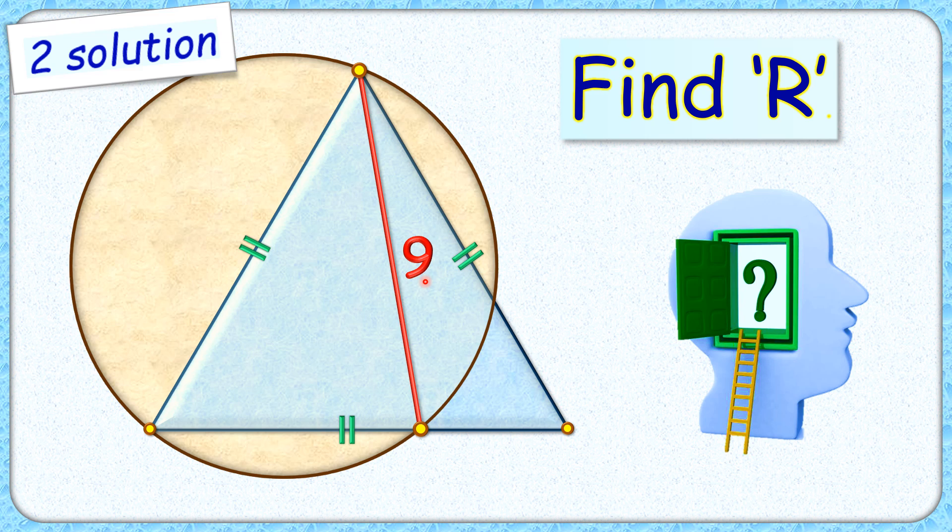The exciting part is with this limited information we have to find the radius of the circle. We will discuss two different solutions where the second solution will be a logical approach to solve it in 30 seconds.